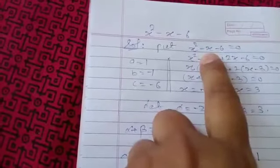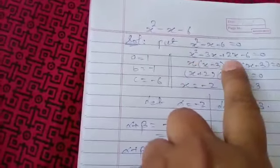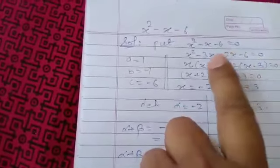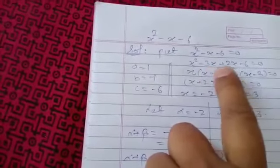Now split the middle term. x² - 3x + 2x - 6 = 0. In this way we will split the middle term.